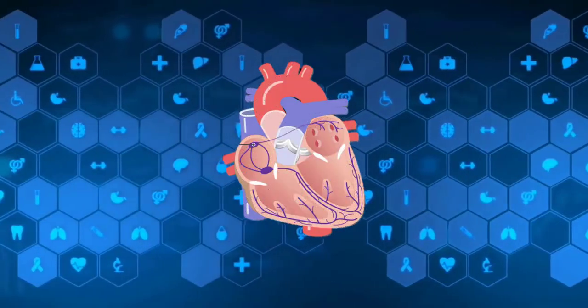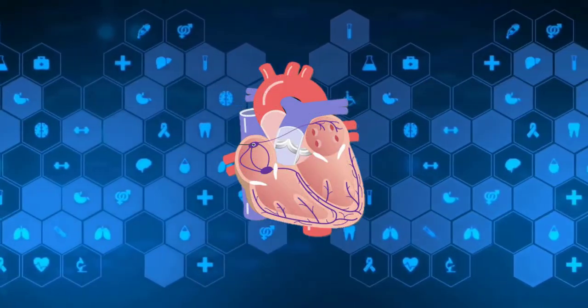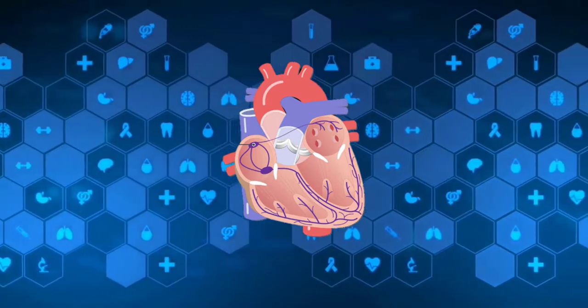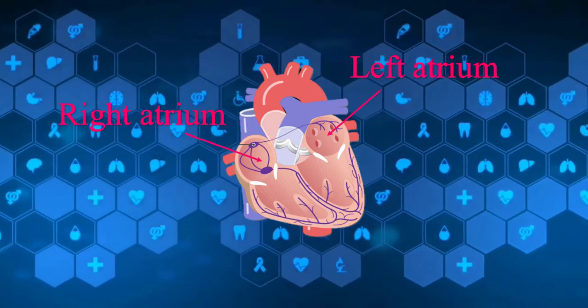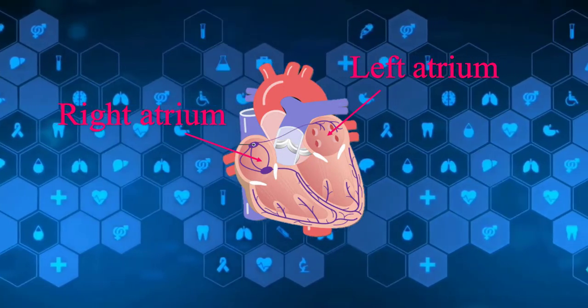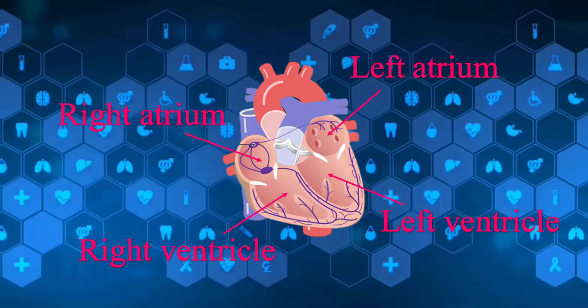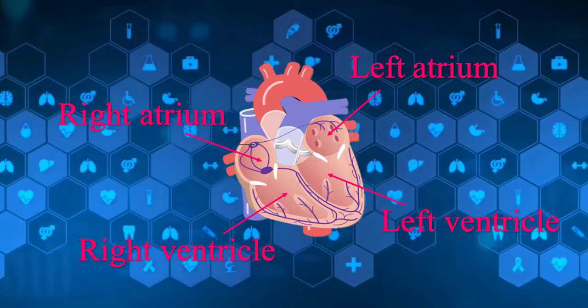Every heart has four chambers. The upper chambers are smaller in size and are known as atria, while the lower chambers are larger and known as ventricles.